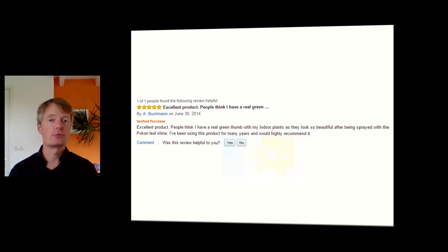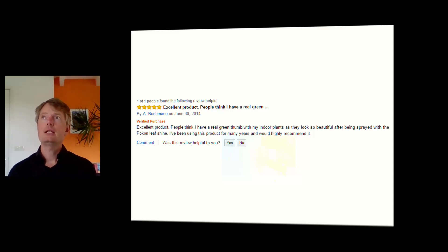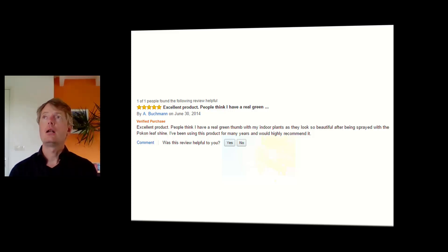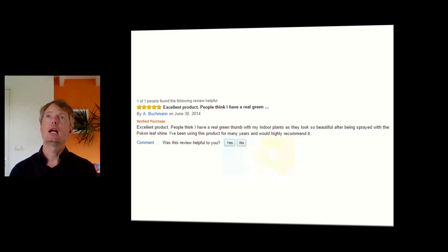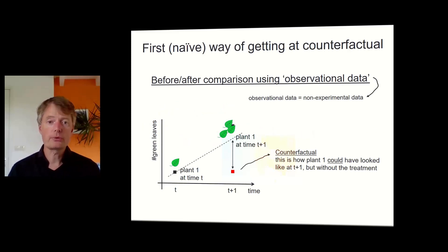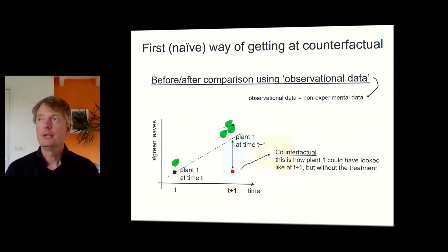We don't know this for certain, so this is a useful but imperfect way of saying something about the effect of a treatment. We see this in product reviews a lot — for example, someone writes: 'It's an excellent product. People think I have a real green thumb with my indoor plants as they look so beautiful after being sprayed with the POCON leaf shine. I've been using this product for many years, I would highly recommend it.' This person is making a before-after comparison and is happy about the product, assuming the leaves would not have changed without the treatment.